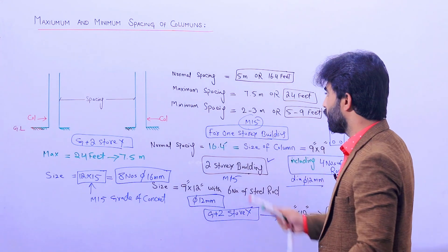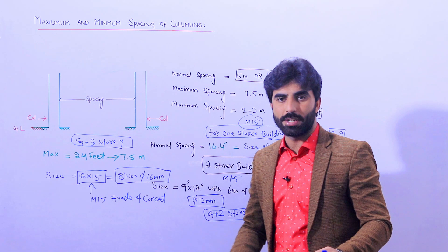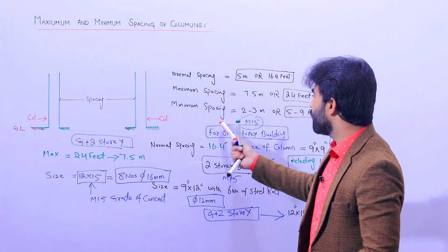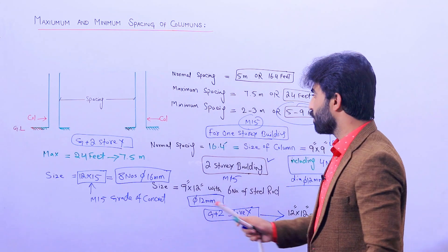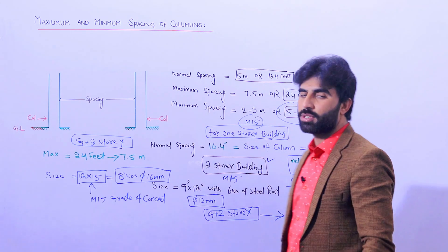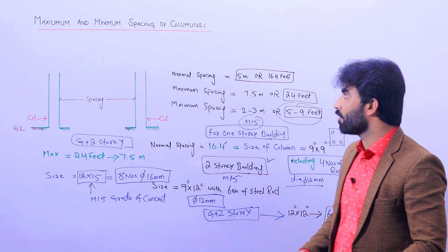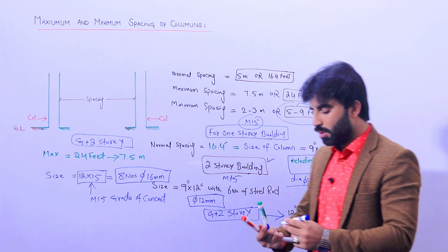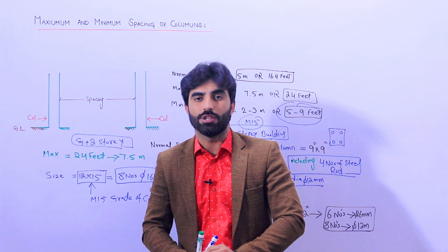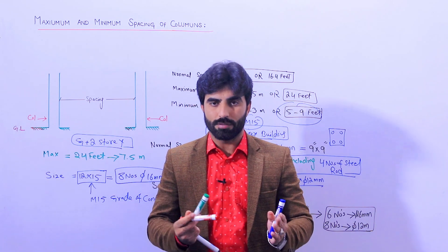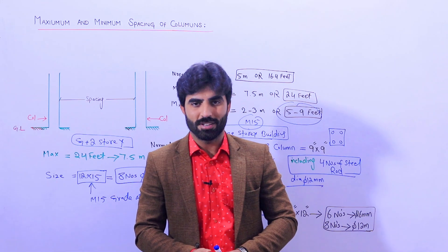So this is the spacing between two columns for a normal residential building — maximum and minimum. As I told you, for 5 to 9 feet minimum spacing, you can use four numbers of steel rods with a diameter of 12 millimeters. I hope this short video helps you understand the maximum and minimum spacing between two columns for buildings from one to three stories. Thanks for watching, see you in the next video.